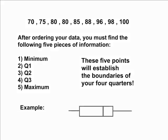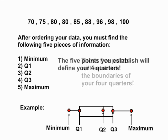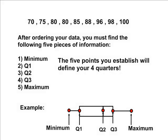Q1, Q2, and Q3, as well as the minimum and the maximum, are five important pieces of information as they will establish the boundaries of the four quarters necessary for your box and whisker plot. Although you only have four quarters, you need five points to establish the boundaries.